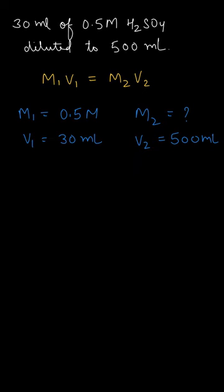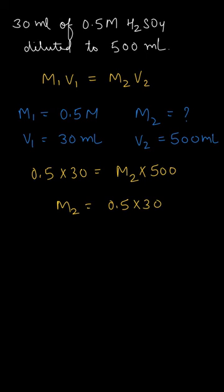Now we will substitute the values here. So that would come out to be 0.5 multiplied by 30 is equal to M2 multiplied by 500. So from here the value of M2 would be 0.5 multiplied by 30 divided by 500.